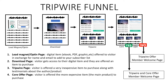Once they get to the core offer page, if they don't want to purchase it, they can click no. There's a no button that will take them to the member welcome page where they can access the first thing they bought. Or if they say yes and make the purchase, they'll go through the purchase process and be sent to the member welcome page where they can access both of the items they purchased.